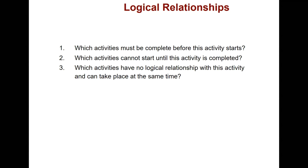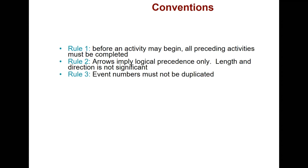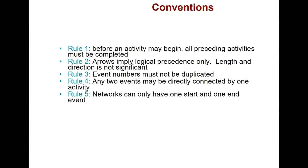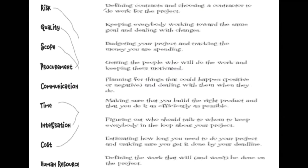When drawing a network diagram, it's important to understand logical relationships: which activities must be complete before this activity starts, and which cannot start until this activity is completed. As a main contractor, you bring all subcontractors into one room to visually understand how they would like to sequence their work — there may be negotiation and dialogue before drawing the logic. Project management is a broad subject area encompassing risk, quality, scope, procurement, communication, time management, integration, cost management, and human resources, but this module focuses on planning and scheduling techniques.